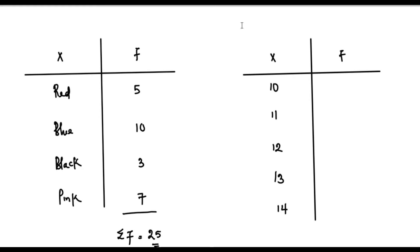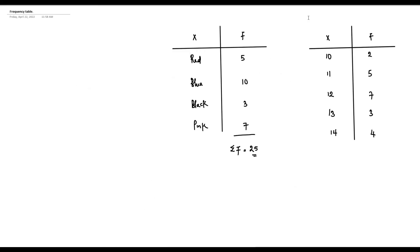After speaking to the students, I was able to get the following frequency distribution: two students are ten years old, five students are eleven years old, seven students are twelve years old, three students are thirteen years old, and four students are fourteen years old. When we sum the frequencies — two plus five is seven, seven plus seven is fourteen, fourteen plus three is seventeen, seventeen plus four is twenty-one — the total number of students in this class is twenty-one. We can call this an age distribution.